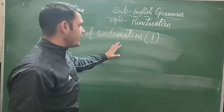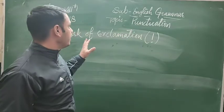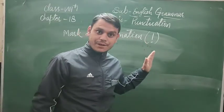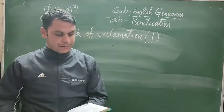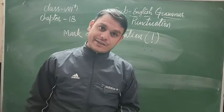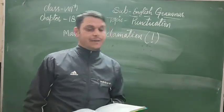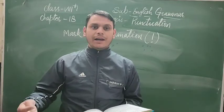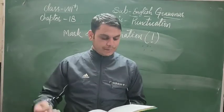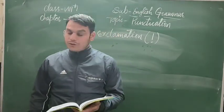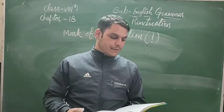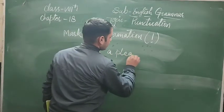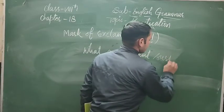Now, where can we use the mark of exclamation — as you know, in the chapter before this we already learnt about interjections. The mark of exclamation is used at the end of exclamatory sentences. For example: 'What a pleasant surprise!' — यानि खुशी या surprise express करने के लिए। 'It was shocking!' — these are exclamatory sentences; at their end, use the exclamation mark.